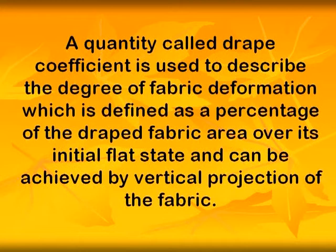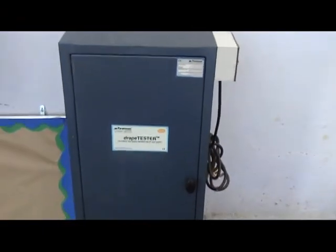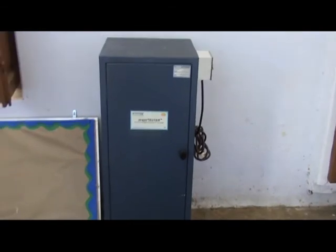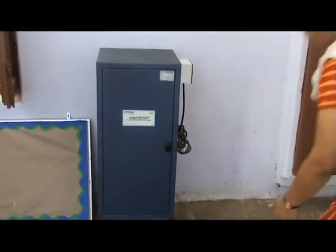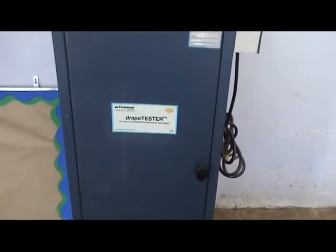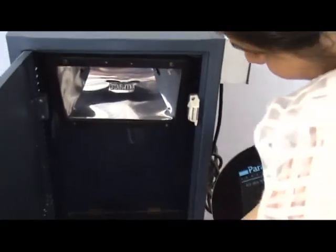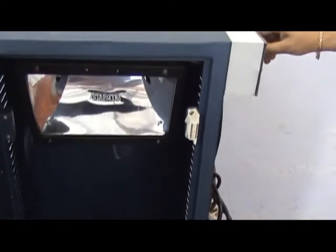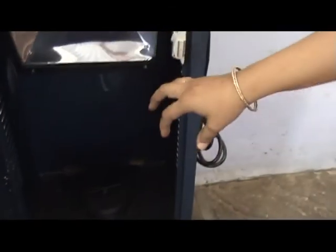The drape coefficient can be achieved by a vertical projection of the fabric. A high drape coefficient indicates a low drape ability of the fabric. In this instrument, the coefficient of drape is calculated by tracing a shadow of the draped fabric on paper. The instrument is lit by a halogen light source, and a cutting template and a roll of ammonia paper for tracing are supplied along with the instrument.